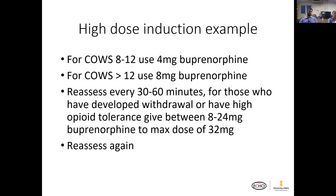In this particular study's induction protocol: if a patient had a COWS score of 8 to 12, they used 4 mg buprenorphine; if the COWS score was greater than 12, it was 8 mg for the initial dose. Some other studies just use 8 mg across the board even for COWS 8-12, with roughly the same success rates. You reassess every 30 to 60 minutes, and if withdrawal isn't under control, you give another 8 to 24 mg at that next evaluation, up to a maximum of 32 mg total for that initial day.